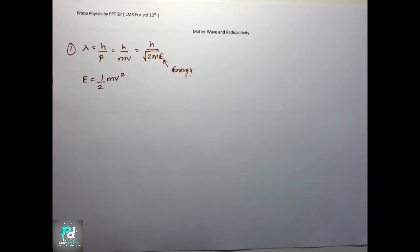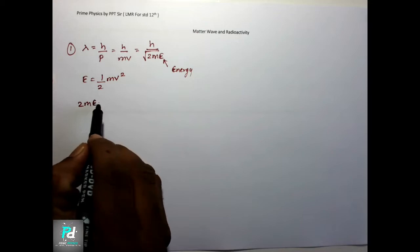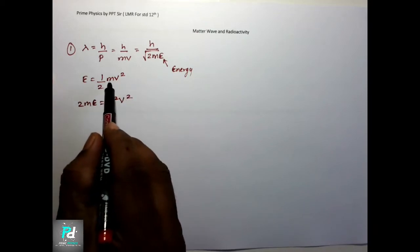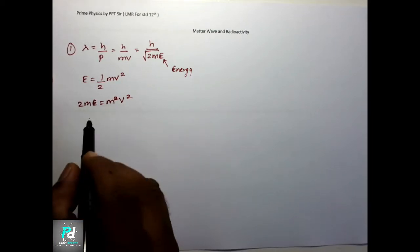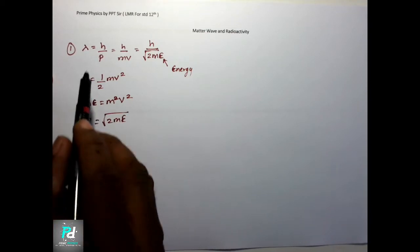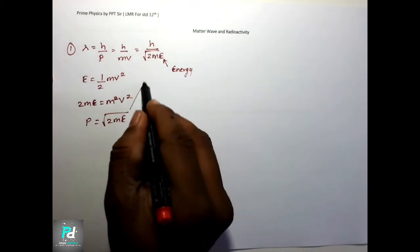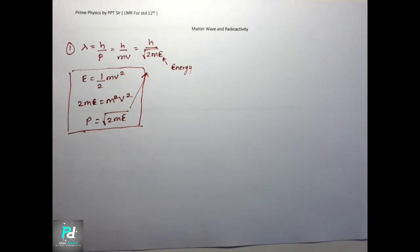To derive this: multiply both sides by m, so 2mE equals m²v². Taking the root gives momentum, so in place of momentum you substitute it. So the first formula is lambda equal to h upon p, second is lambda equal to h upon mv, and third is lambda equal to h upon root of 2mE, where E is the energy.